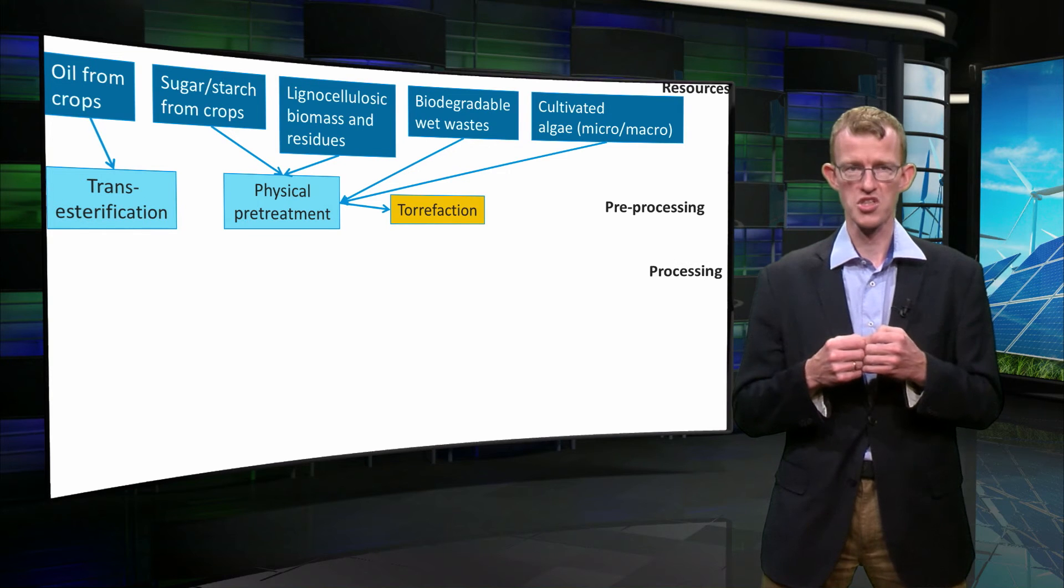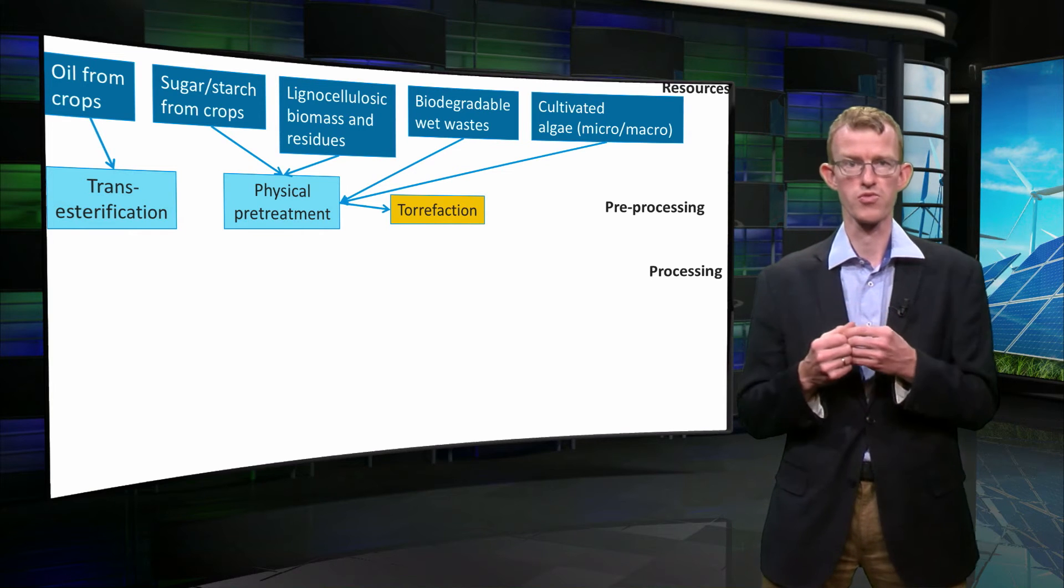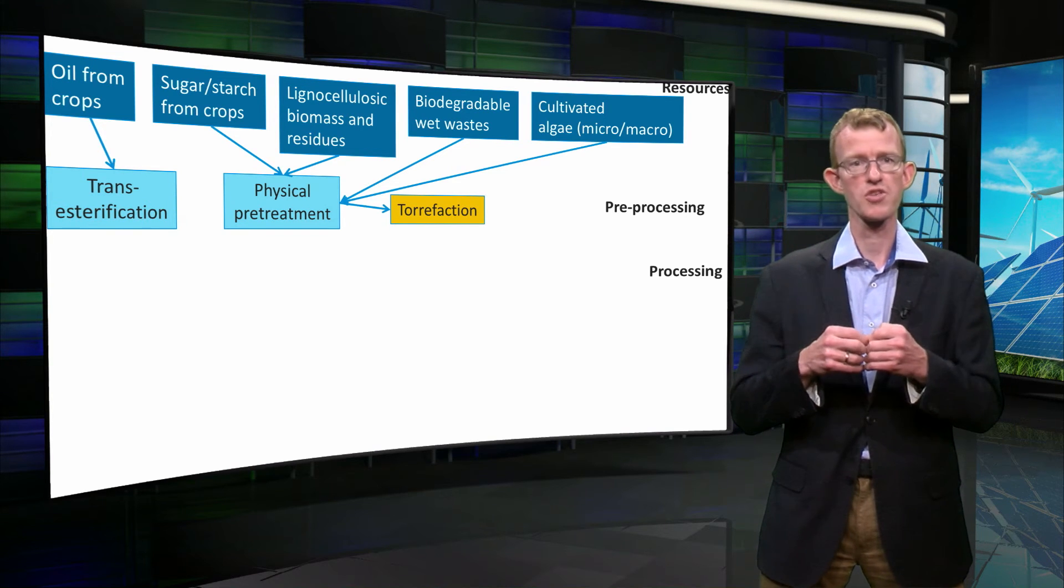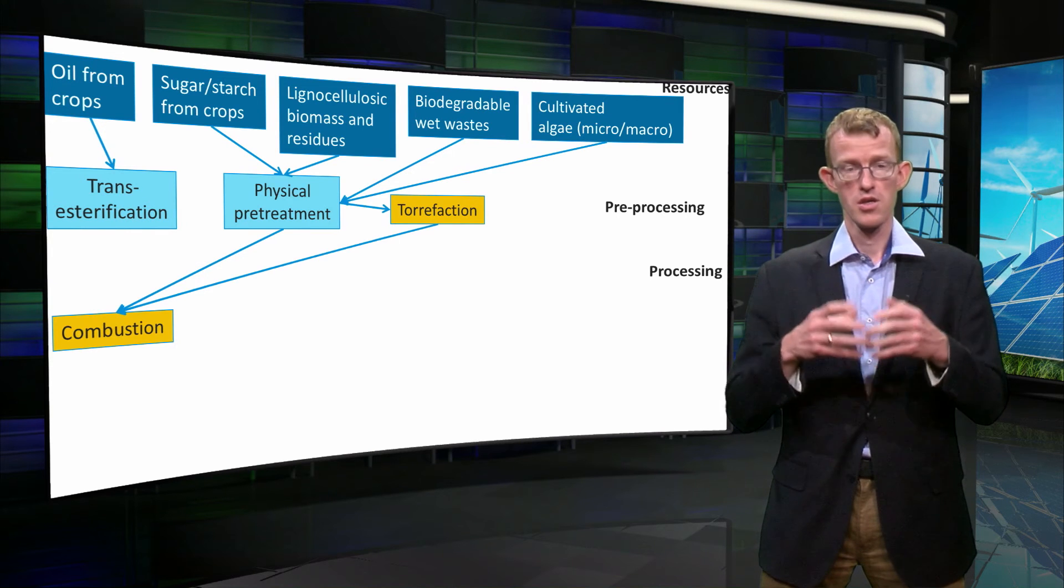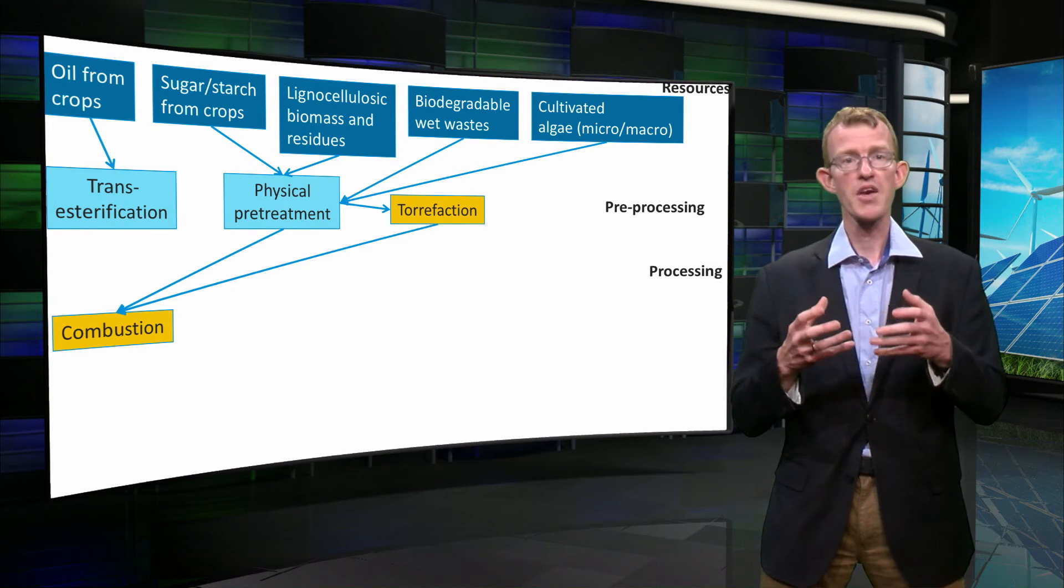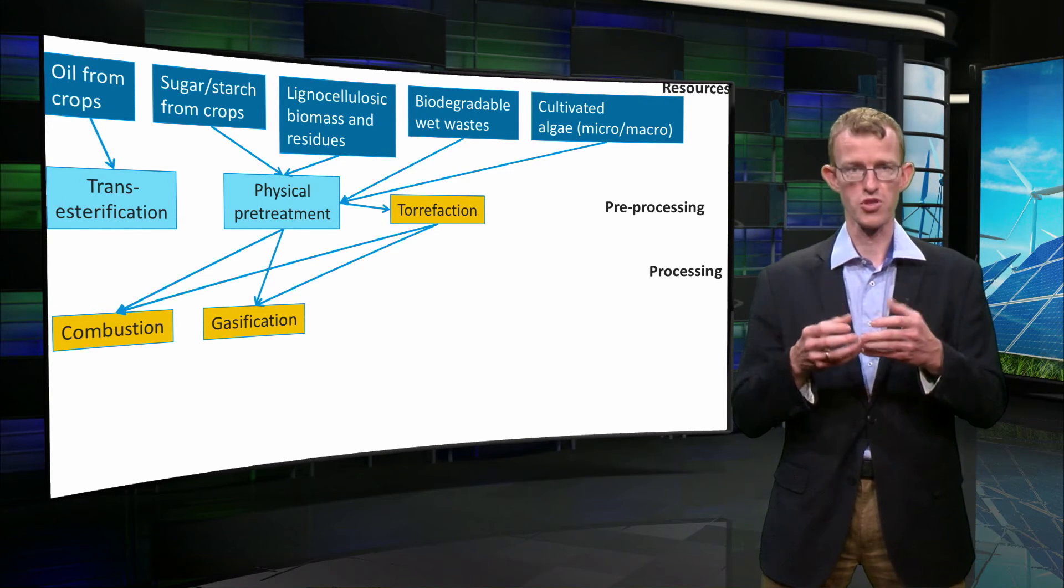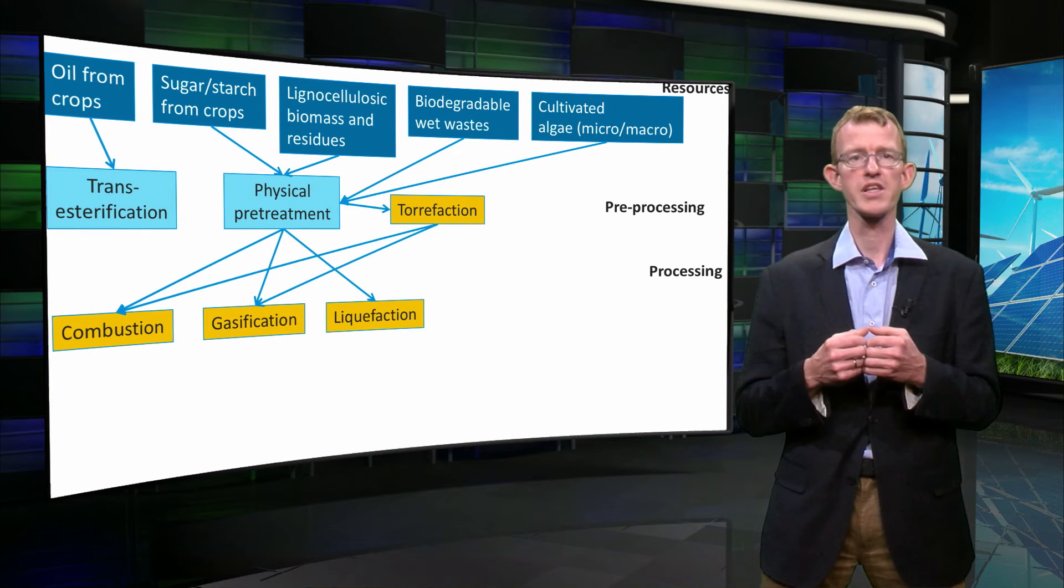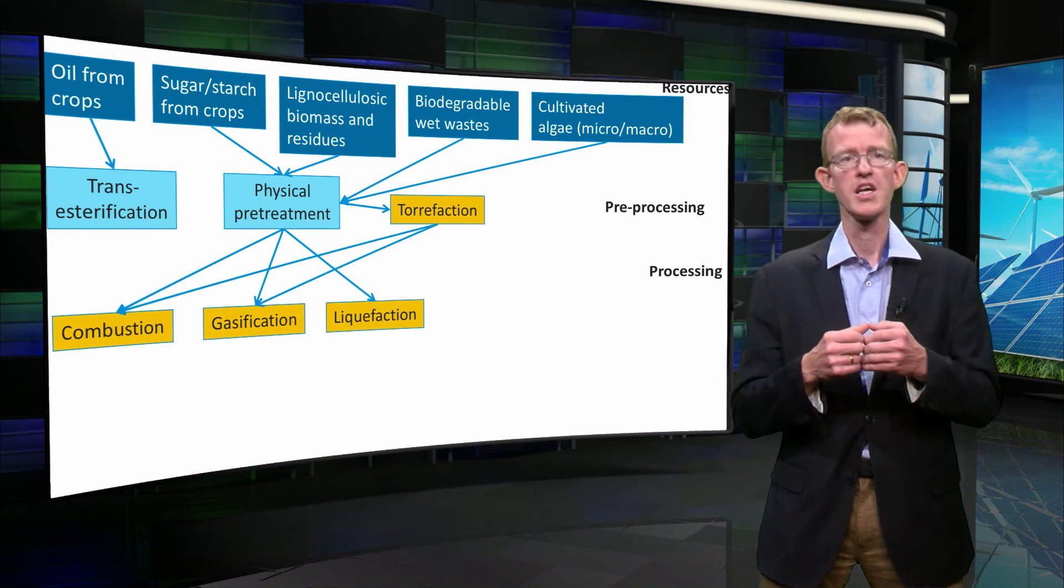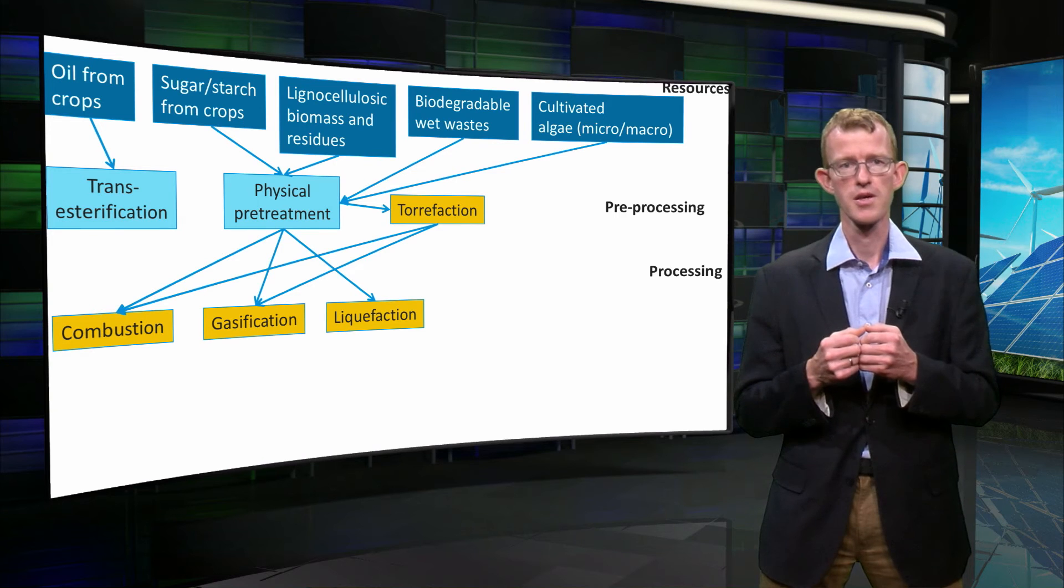Then we come to the actual processing. This can be divided into two categories: on the one hand thermochemical treatment and on the other hand biochemical treatment. The first category, thermochemical treatment, makes use of chemical reactions that run at high temperatures, several hundred degrees Celsius. First example is combustion—this is simply burning the biomass, and that gives you heat. Then we have gasification; in that case less oxygen is used, and as a result we obtain oxygen-rich gases as a product. We can also turn the biomass directly into energy-rich liquids, and this is called liquefaction. To be precise, torrefaction, that I mentioned before, is also a thermochemical technique. This is why we gave all these technologies the same color orange on the slide.